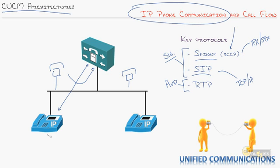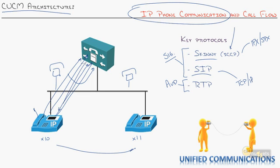Here's how a phone call would work. Let's say this is extension 10 and this is extension 11. This phone picks up and signals the off-hook status — hey call manager, I went off-hook. The call manager plays dial tone. You dial a one, then another one — obviously we're dialing extension 11. The call manager then signals down to the other phone to ring. All of this is done using Skinny or SIP.